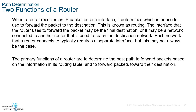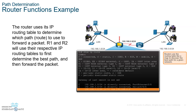When a router receives a packet, it routes the packet. When a router receives a packet with the destination IP address on it, it's going to perform a lookup. Let's say this is a router — let me walk you through it step by step.